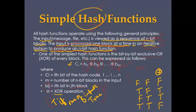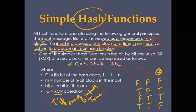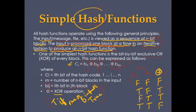For two values b1 and b2: if both are false, XOR is false; if one is true and the other false, XOR is true; if both are true, XOR is false. This is the simple truth table for the exclusive XOR operation.